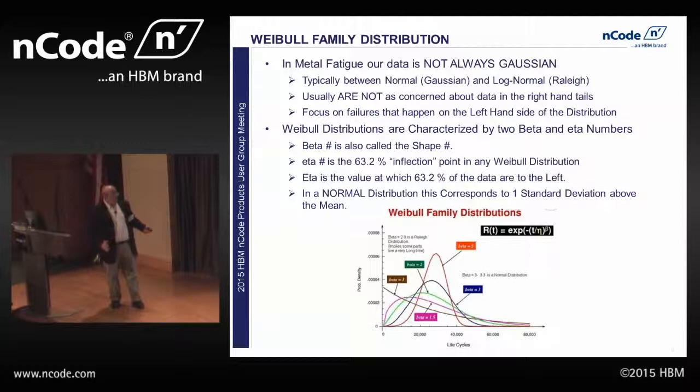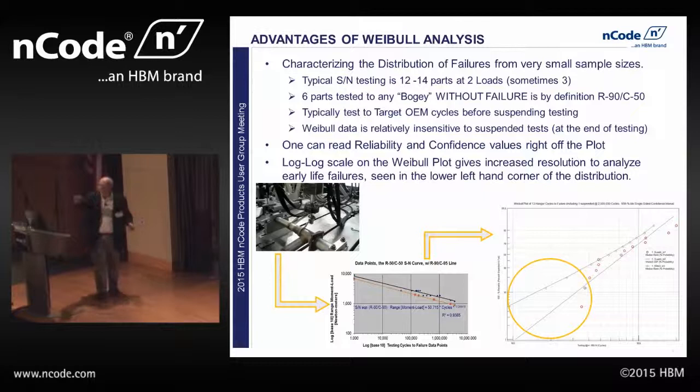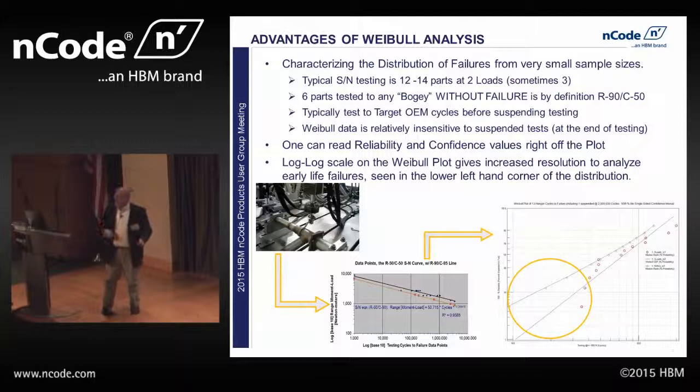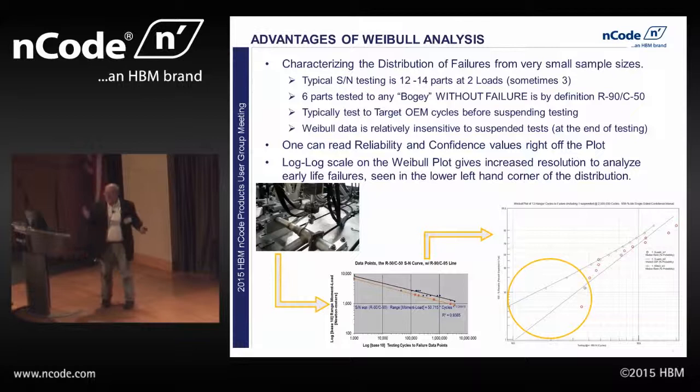A normal distribution has beta at one standard deviation. By the way, Weibel was actually a strain gauge guy — he was investigating the metal that goes into the strain gauge. We're characterizing the distribution of failures for very small sample sizes. We've done probably 1,000 SN curves literally at our group, and other members of my group can tell you all about that too.